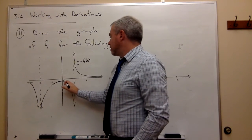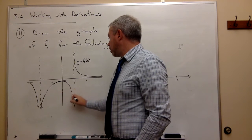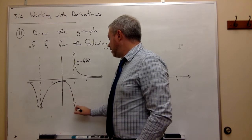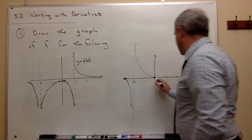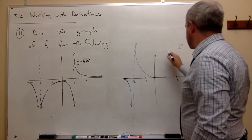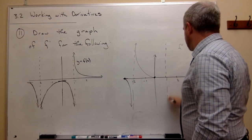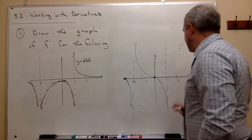After I hit 0, slopes get more and more negative. More and more negative, so it heads down as it's going to 1. This thing heads down to negative infinity.